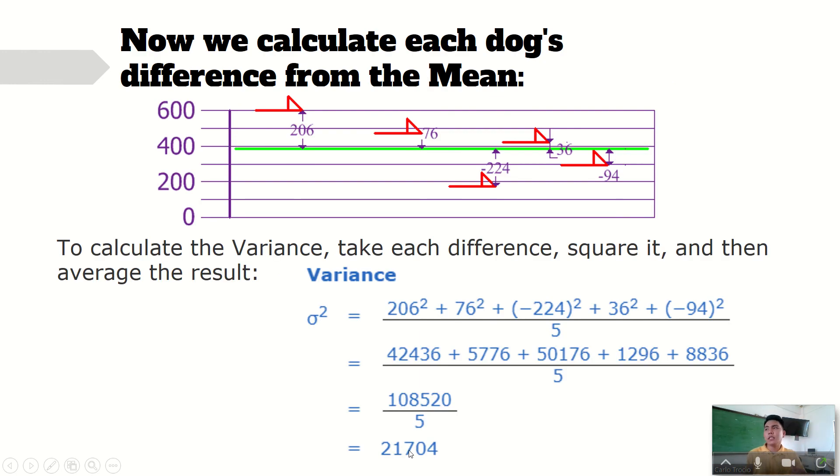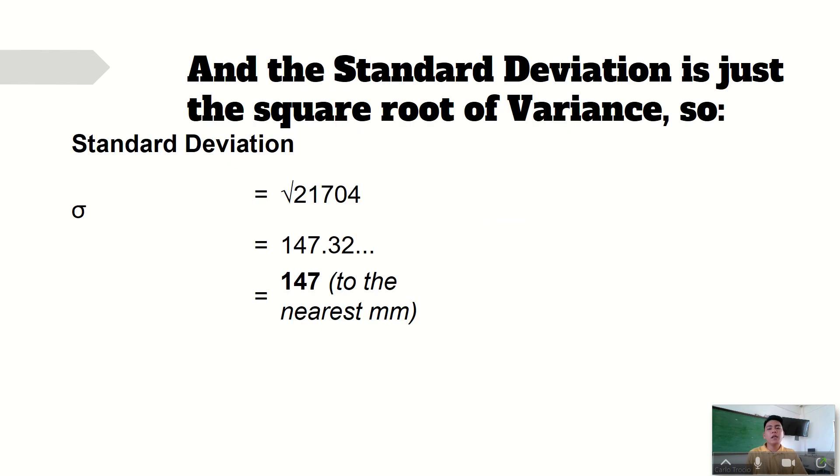That is how varied your data are. But that is in millimeters, in terms of millimeters, 21,704. That is the variance.